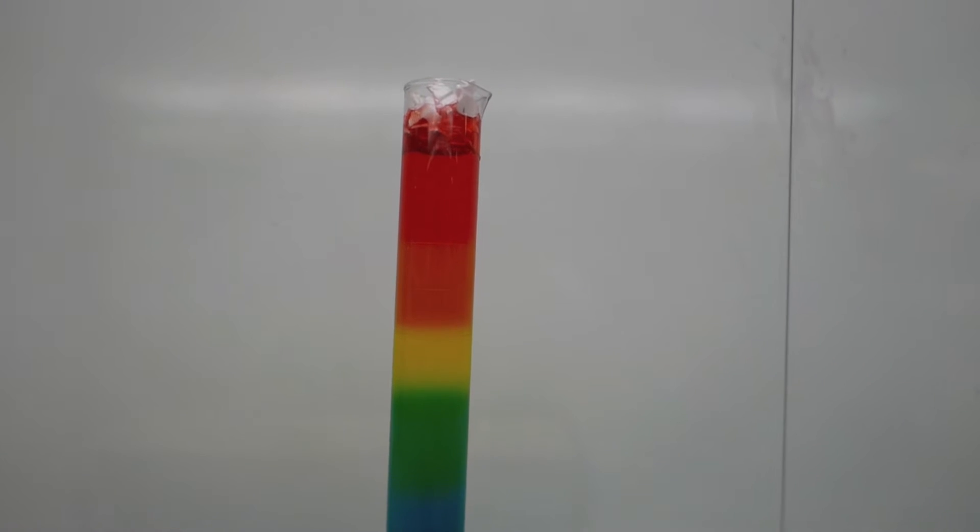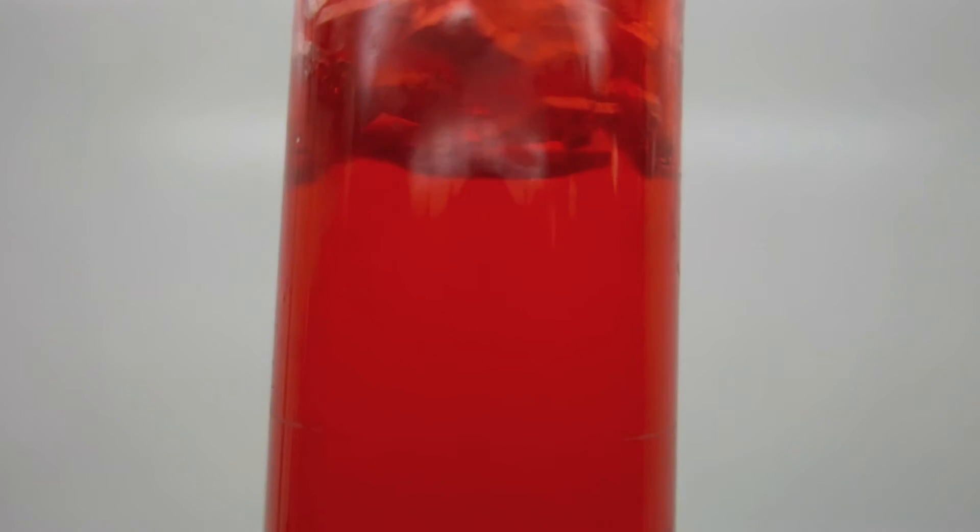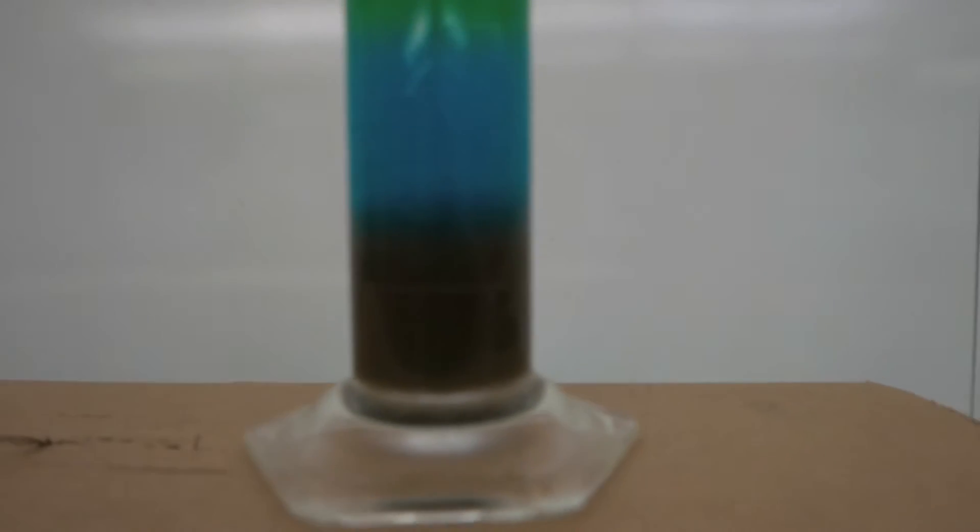The layers stay separated because each color is at a different density. The least dense is at the top because it had no salt dissolved into it at all. As we proceed down the column, each additional color had more salt added to it. It made it denser, so it's able to support the color above it.